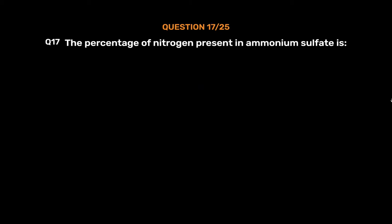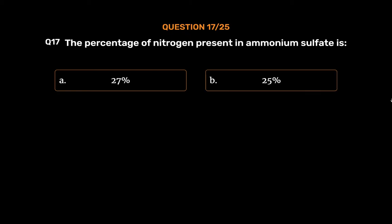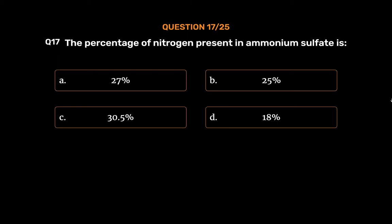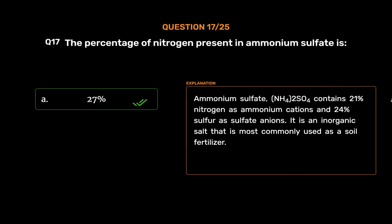Question No. 17. The percentage of nitrogen present in ammonium sulfate is: Option A. 27%. Option B. 25%. Option C. 30.5%. Option D. 18%. The correct answer is Option A, 27%. Ammonium sulfate (NH4)2SO4 contains 21% nitrogen as ammonium cations and 24% sulfur as sulfate anions. It is an inorganic salt most commonly used as a soil fertilizer.